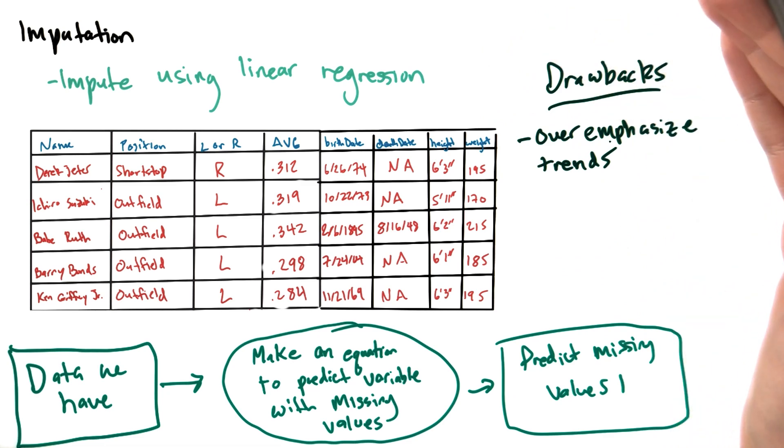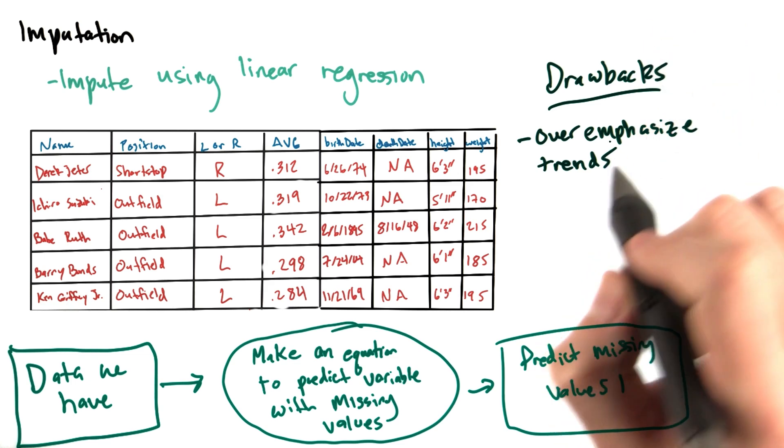For example, if there is a relationship between date of birth and height in MLB players, all of our imputed values will amplify this trend.